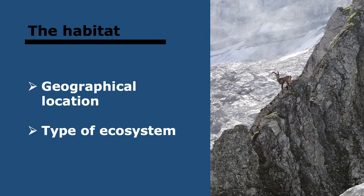Starting off with the habitat. The habitat is the place where an organism, a population, a species, or a community lives. It can mean both the geographical location as well as the type of place — the type of ecosystem — and also the physical conditions within the ecosystem. For example, the ibex lives in an alpine habitat, such as the Italian Alps, at very high altitude on sites that are often snow-covered and with little competition from other animals.